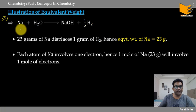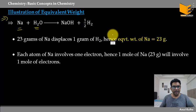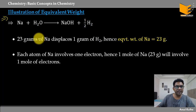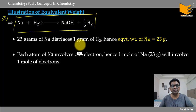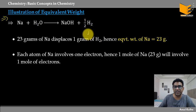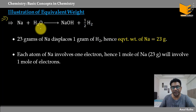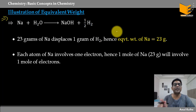यहाँ पर एक illustration देख रहे हैं equivalent weight को लेके। Reaction है: Na reacts with water gives NaOH + ½H₂. अब यहाँ पर equivalent weight का definition याद करें — weight of substance that reacts or displaces 1 gram of hydrogen, 8 gram of oxygen, या 35.5 gram of chlorine. यहाँ पर hydrogen displace हो रहा है। Half mole of H₂ का mass 1 gram होता है।